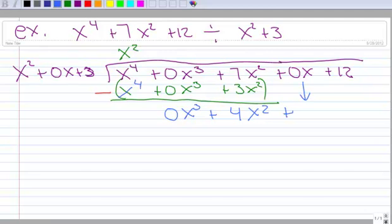Bring down this term. So, plus 0x. If you continue using your zeros in here, it just really helps keep your place. So, I encourage you to do that.